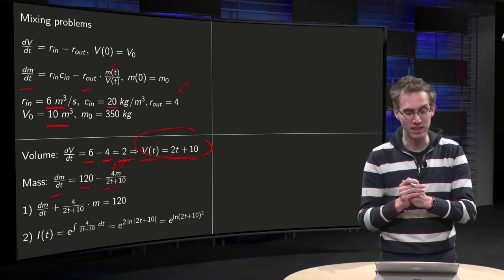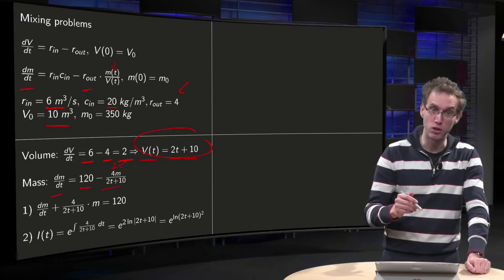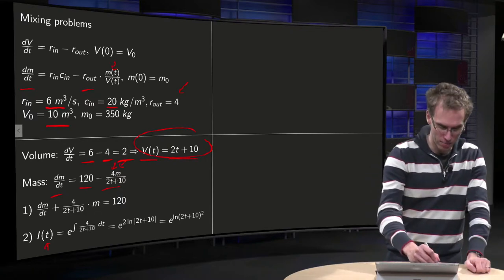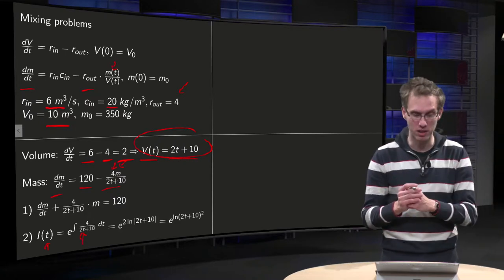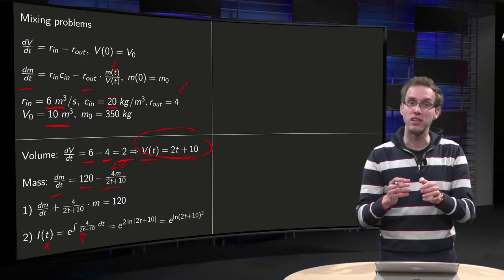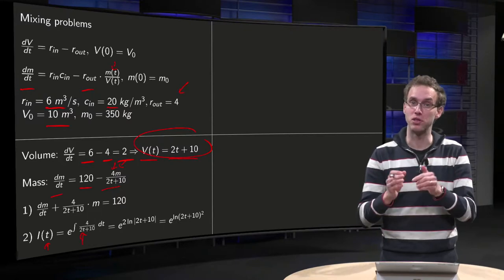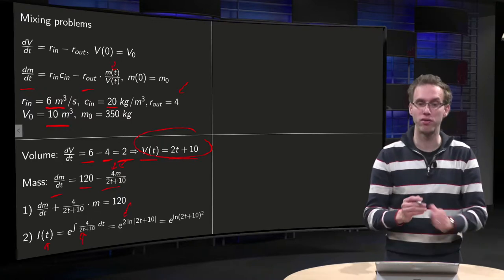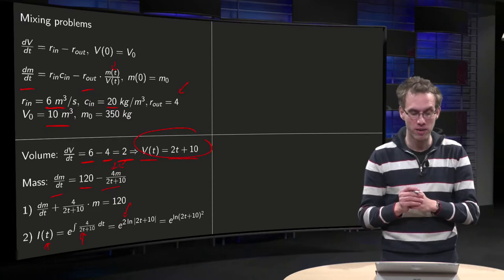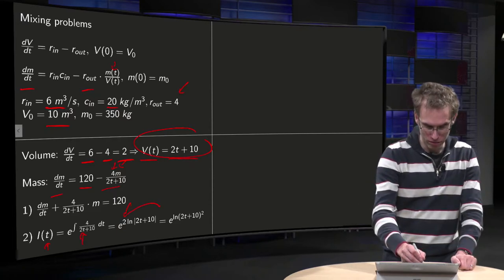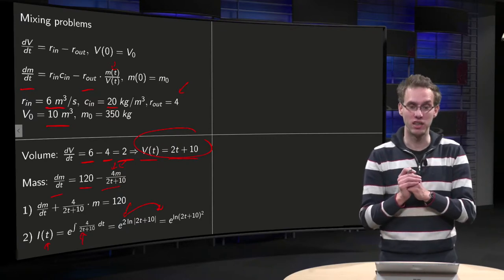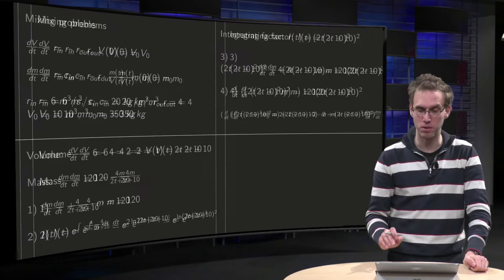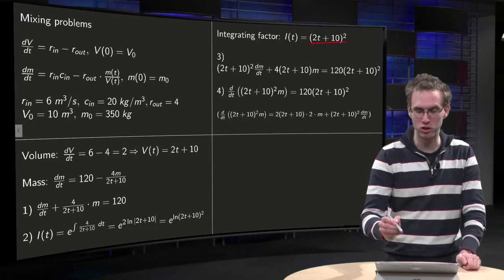We can use our integrating factor method. First we have to determine our I(t), our integrating factor. How do we do that? We have to integrate p with respect to t and put it in an exponent. The antiderivative of 1 over (2t + 10) equals one half times ln of (2t + 10) with an additional factor of 4. 4 times 1 half equals 2 times ln of (2t + 10). And you can put the 2 over here. You really have to simplify your integrating factors whenever you can. So we get e to the ln(2t + 10) squared, which is of course just (2t + 10) squared, because the e and the ln cancel each other out.